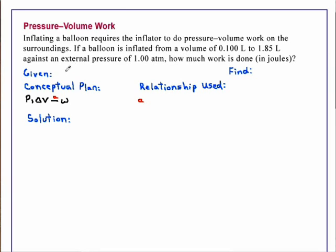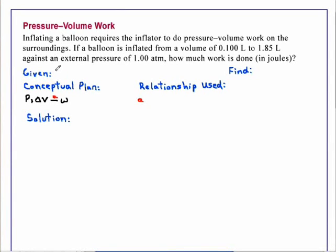how much work is done in joules? We are given an initial volume V1 that is equal to 0.100 liter and a final volume V2 that is 1.85 liters, an expansion that is done against a pressure of 1.00 atmosphere and we are asked to find the work in joules.